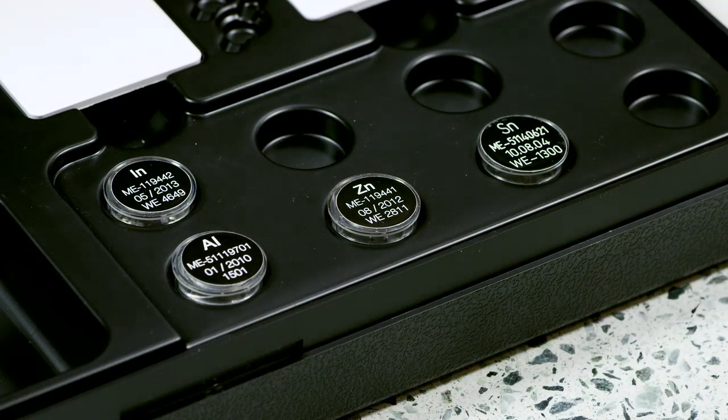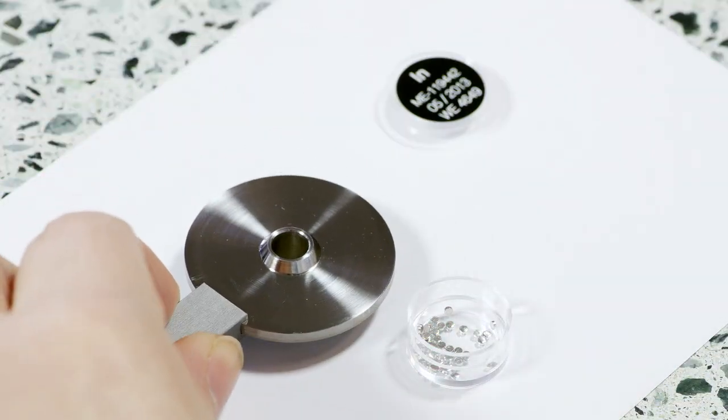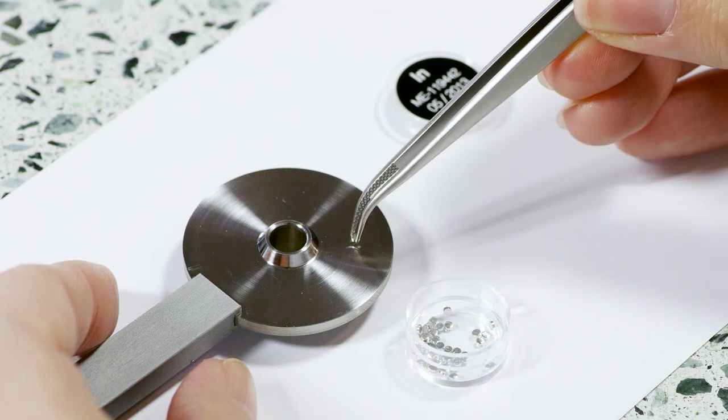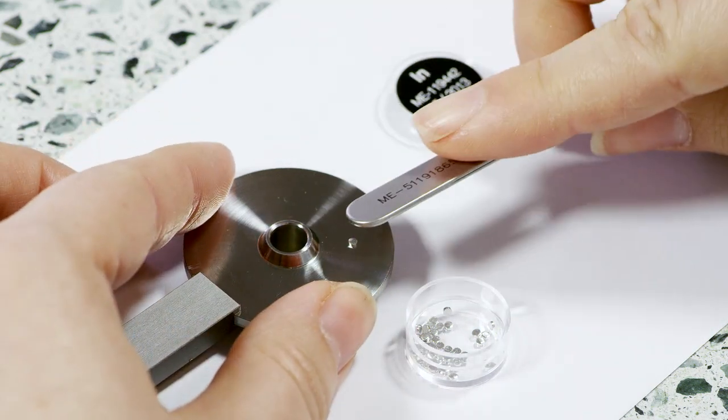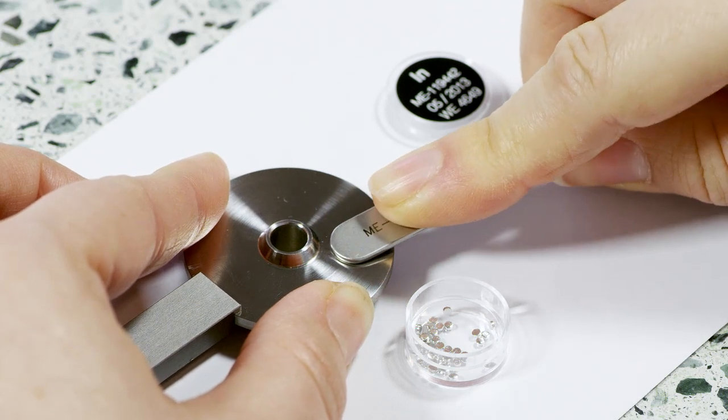Let's start with the preparation of the reference substance. We will use indium as an example. The soft indium pills can be pressed flat. The resulting sample shape provides better thermal contact.